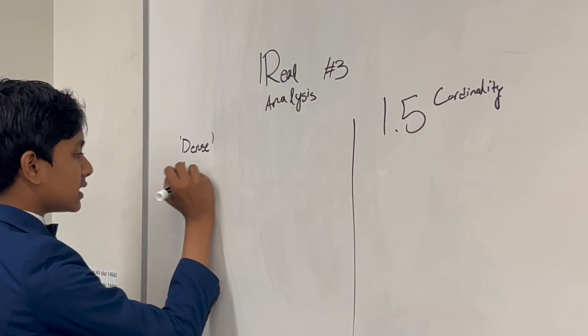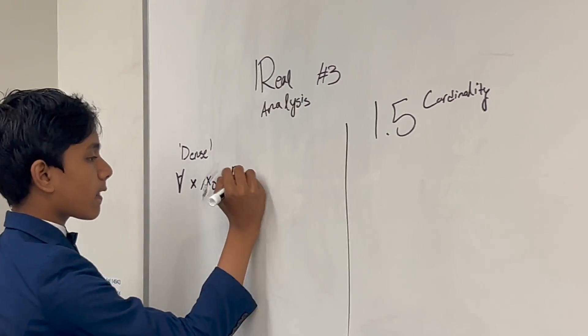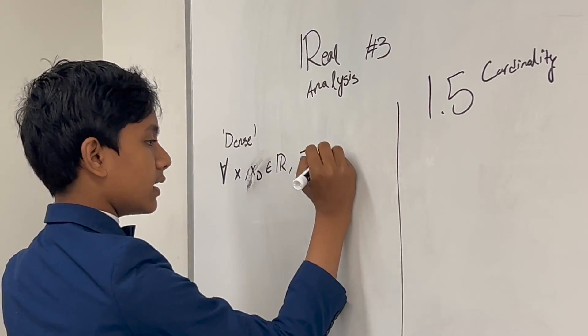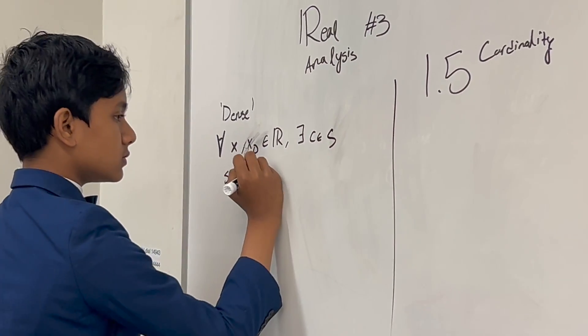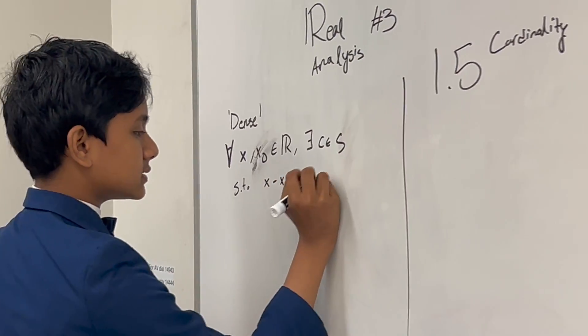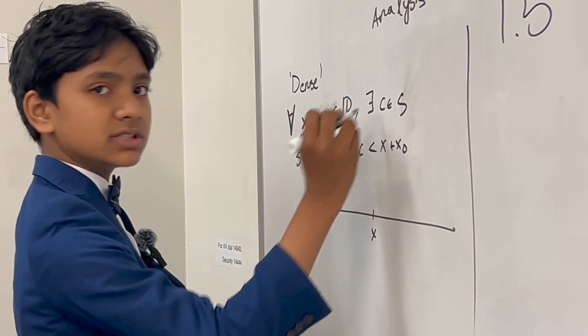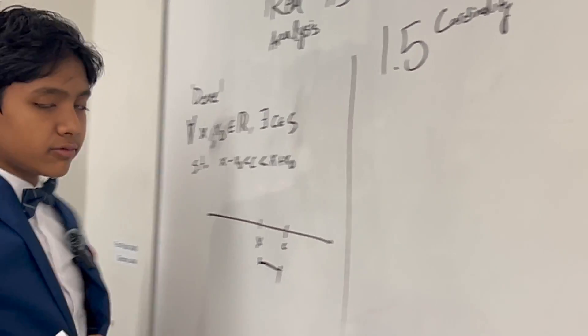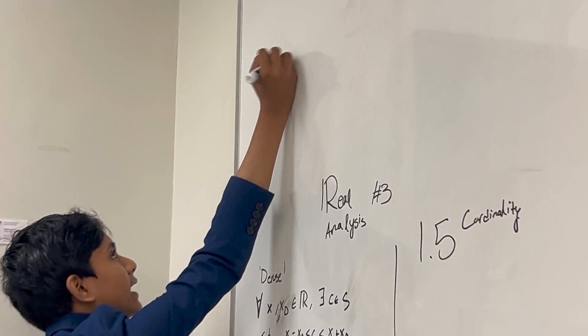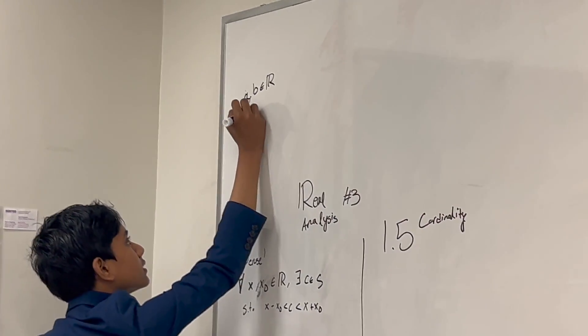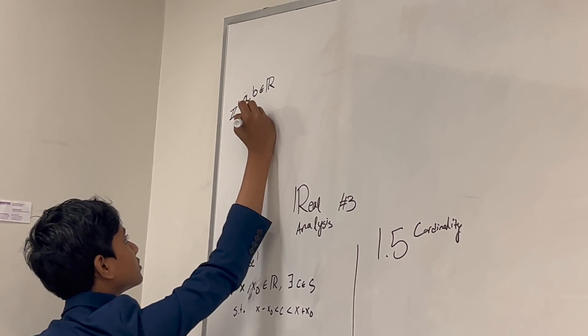So, for all x and x naught in the real numbers, there exists some number c in the one that will prove it for us, the rationals, but it's going to be in general, such that x minus x naught is less than c is less than x plus x naught. What that essentially means is that if we have x, we can find any instance of something in our set that's any distance we want away from x. So, we have two real numbers a and b, and what we're going to do is take some integer n, so this is in z, and multiply a and b by them.